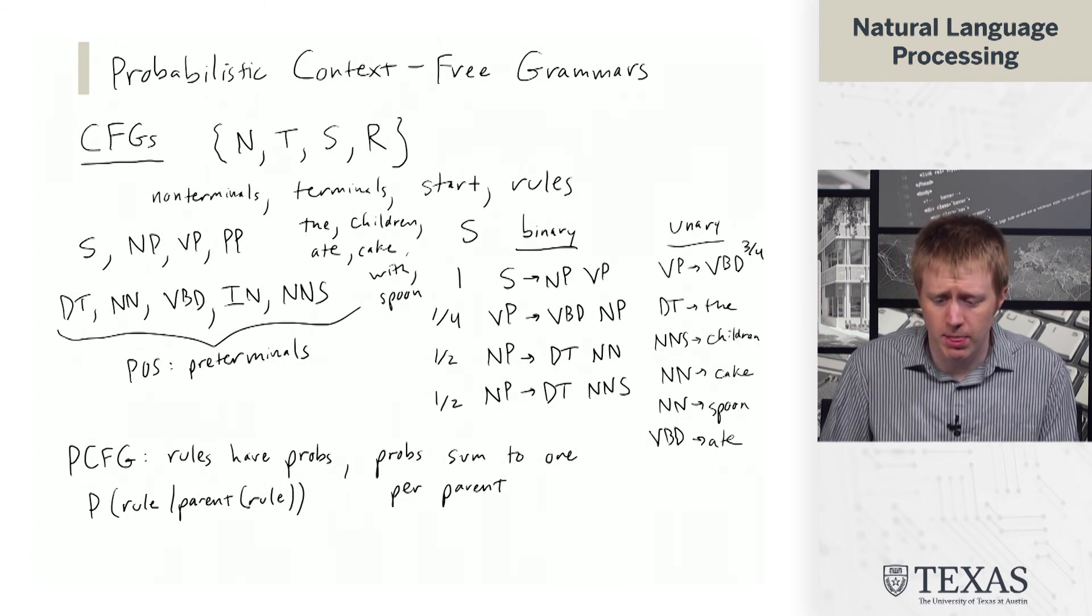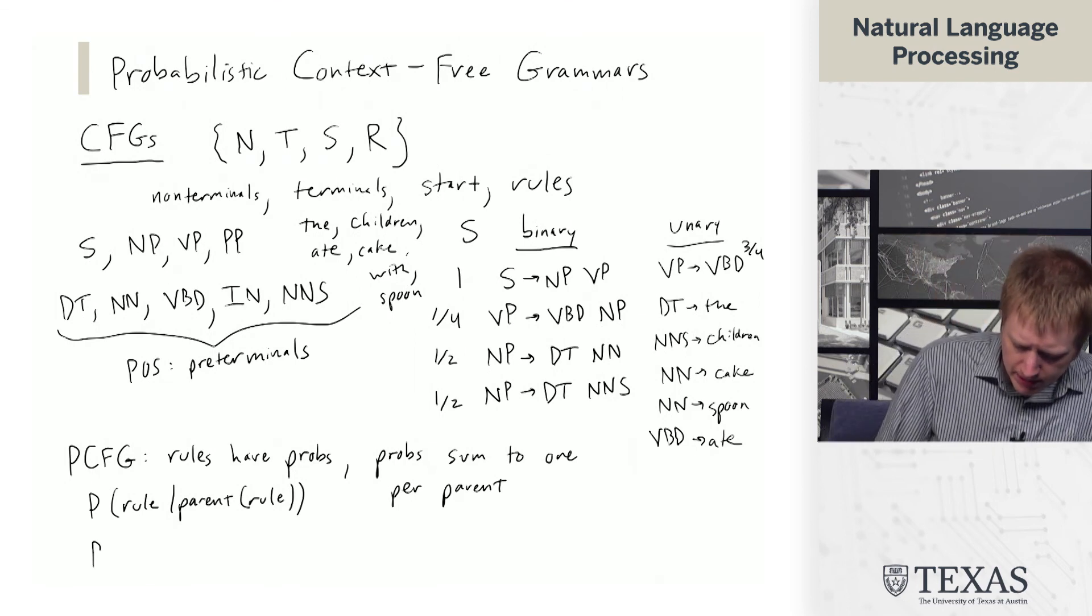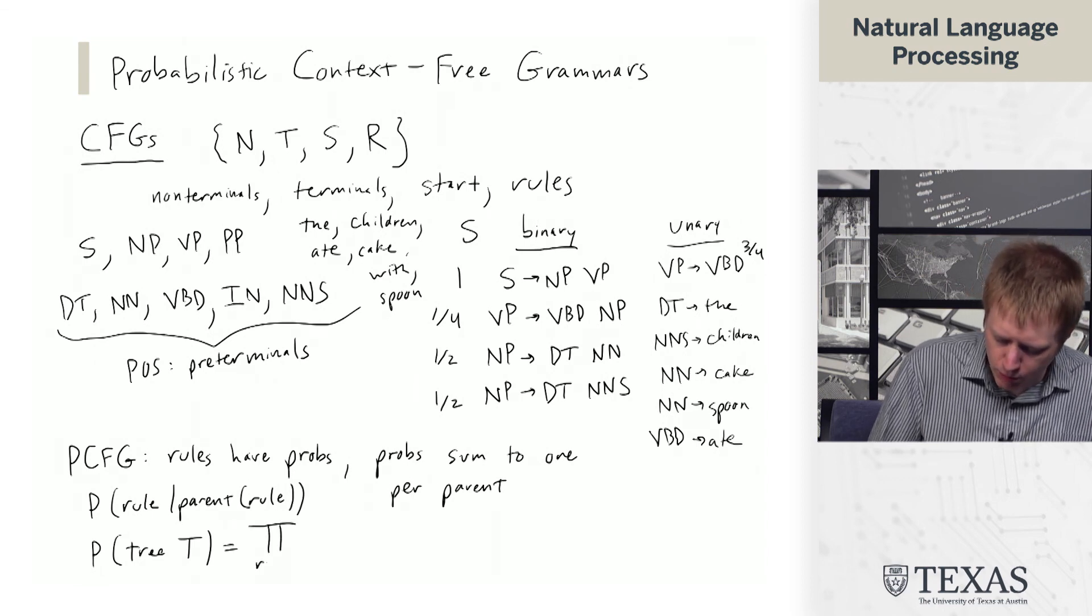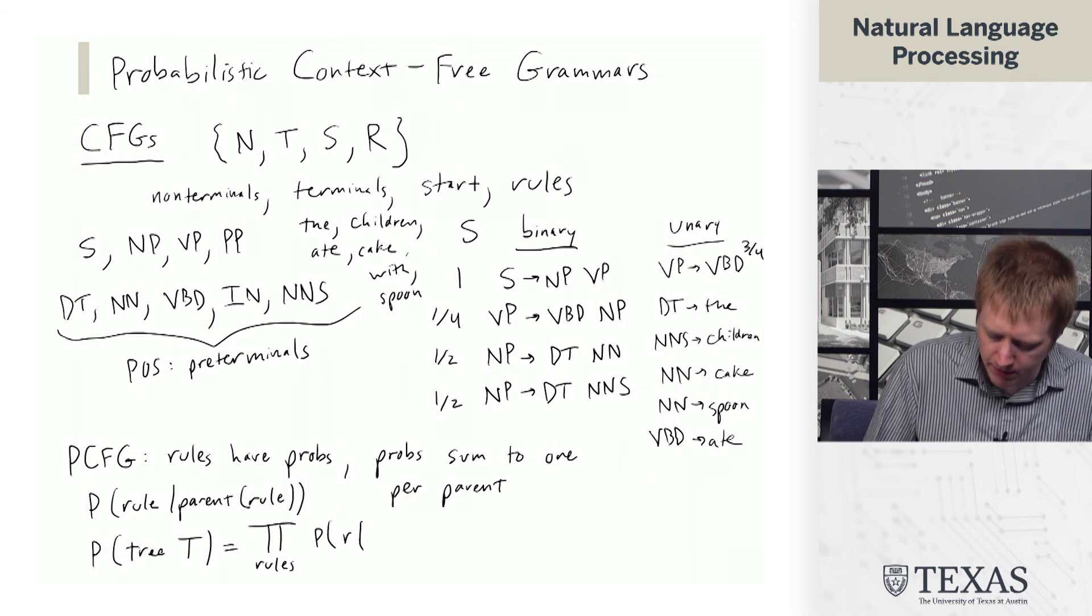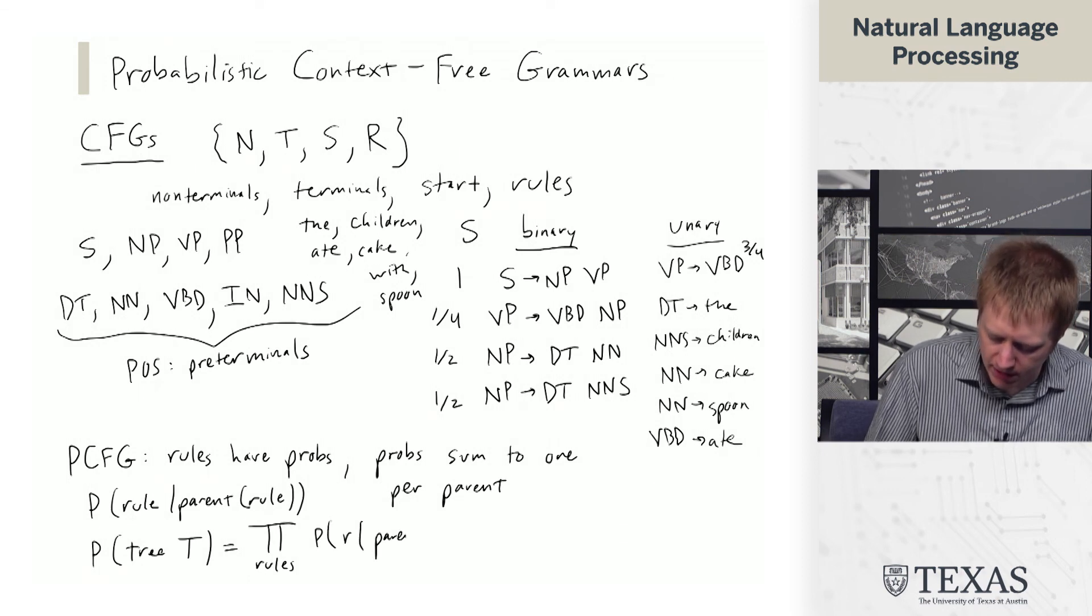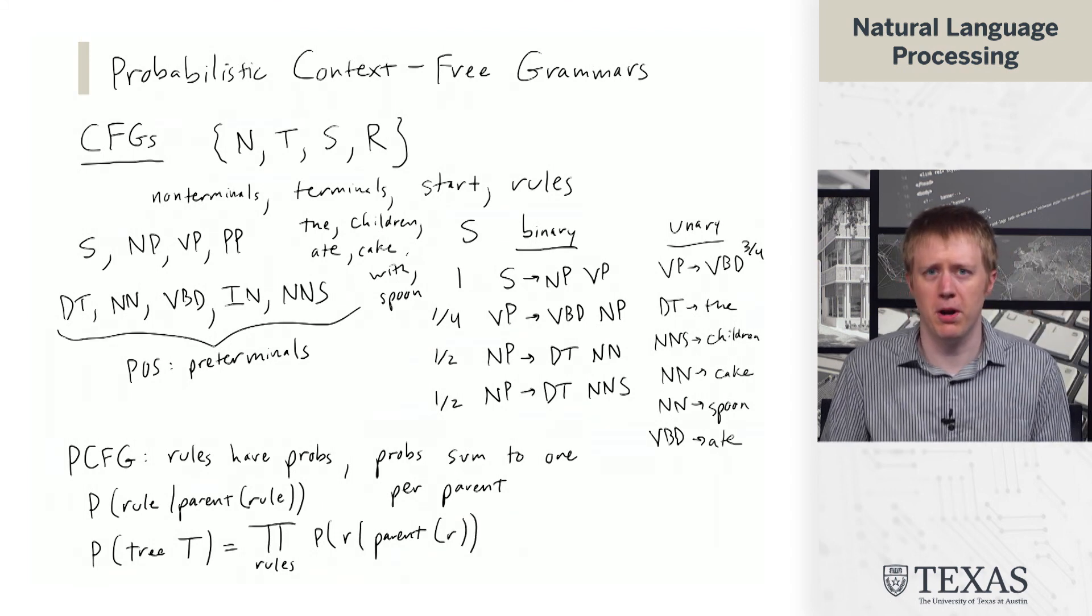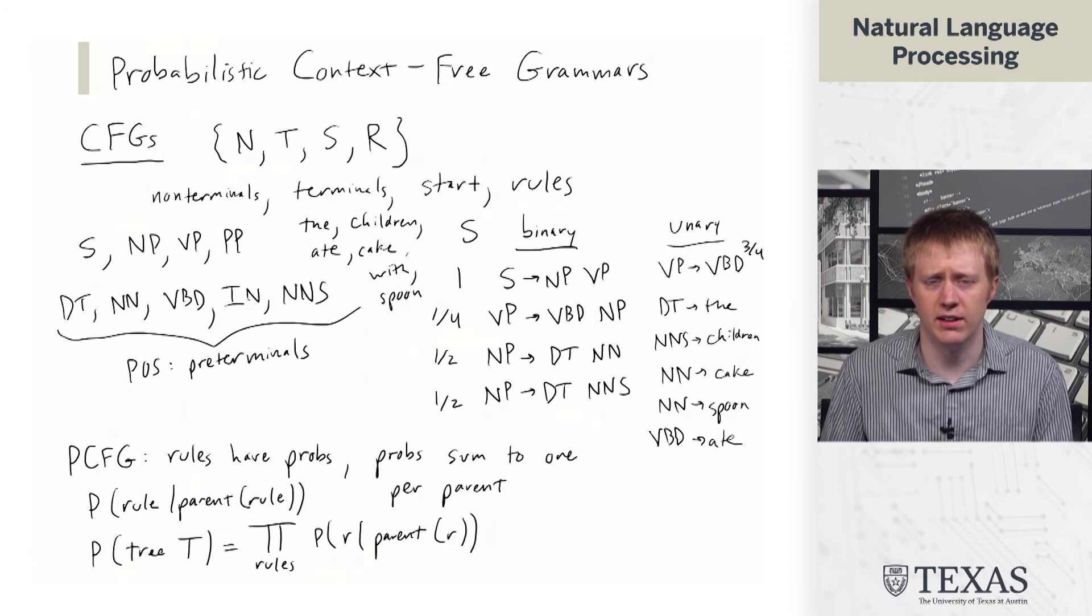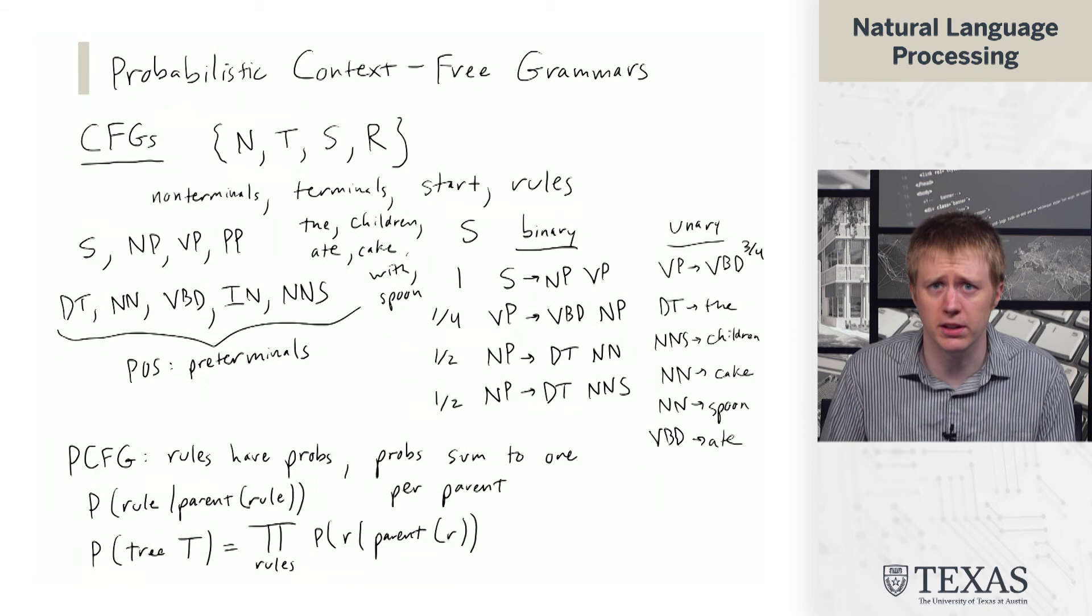The probability of a tree is simply the product over the rules in that tree of the probability of the rule given its parent. So if I show you a parse, you can just multiply the probability of each production together to get the probability of the whole tree.